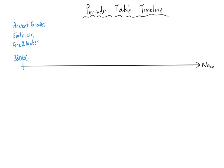First, let's take a look at an overview of how our ideas have changed over time as we've gathered more evidence. The ancient Greeks were the first people who floated the idea of elements existing, but what they thought of as elements were quite different to what we think of now. They called their elements earth, air, fire, and water, and all substances in the world were made up of combinations of these four elements in varying amounts.